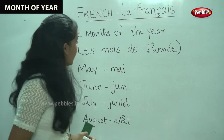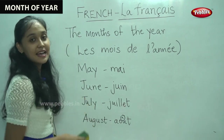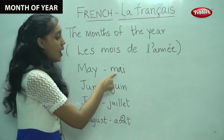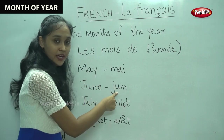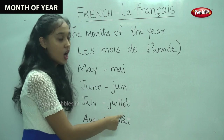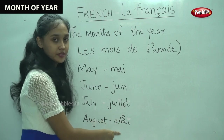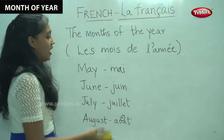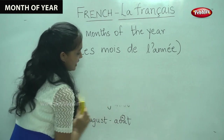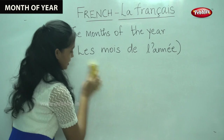Now, can we say these months once again? May is Mai, June is Juin, July is Juillet, August is Août. Now moving on to the next four months.